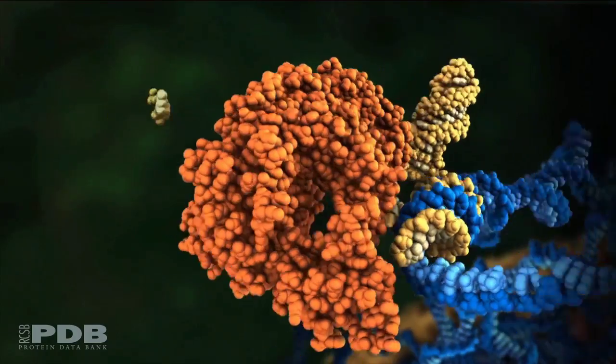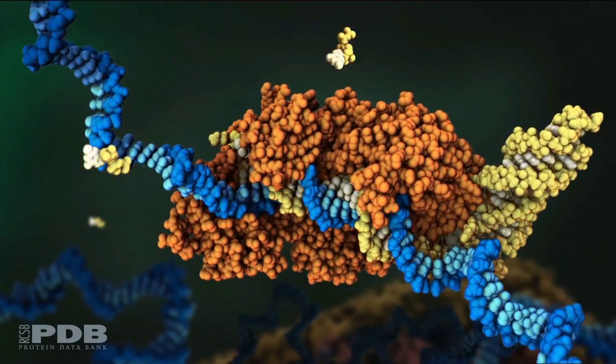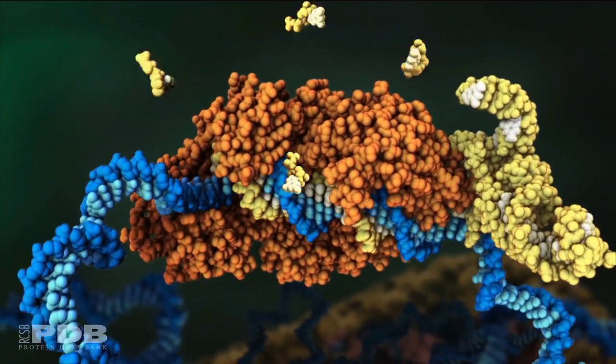The first enzyme, HIV reverse transcriptase, copies the viral RNA genome by combining individual host nucleotides to build a complementary DNA strand.